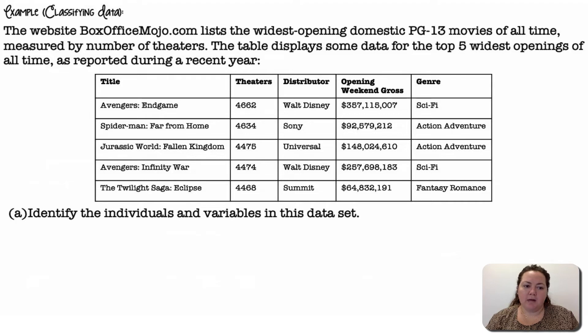All right, so an example classifying data. The website boxofficemojo.com lists the widest opening domestic PG-13 movies of all time, measured by a number of theaters. The table displays some data from the top five widest opening of all time as reported during a recent year.